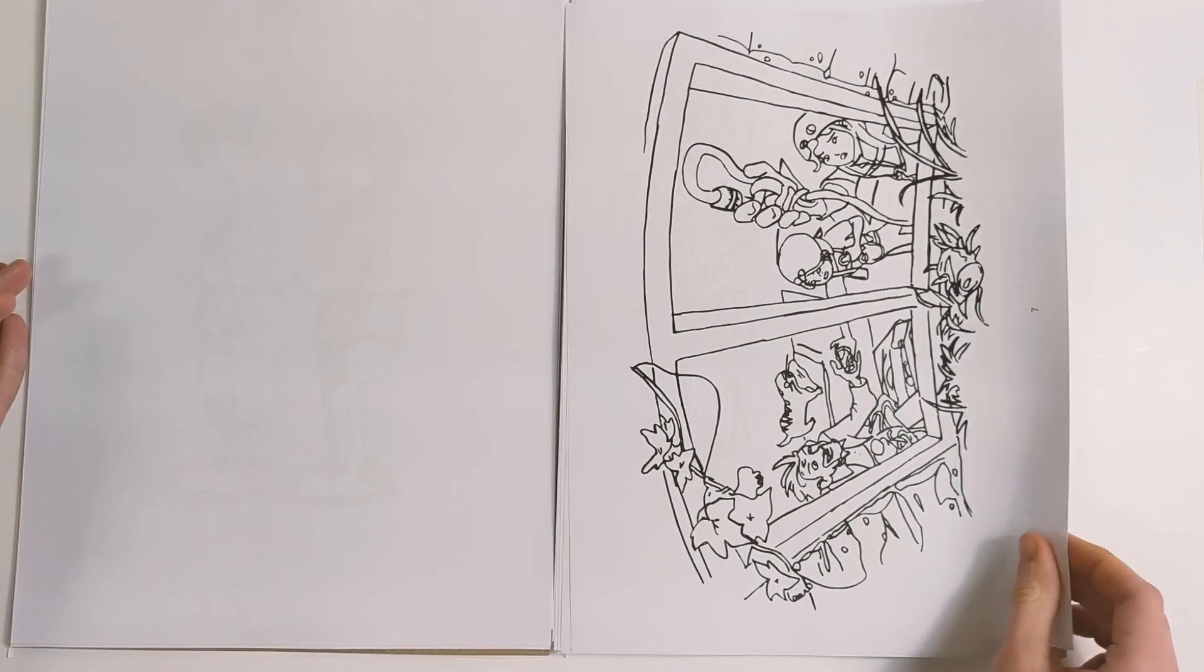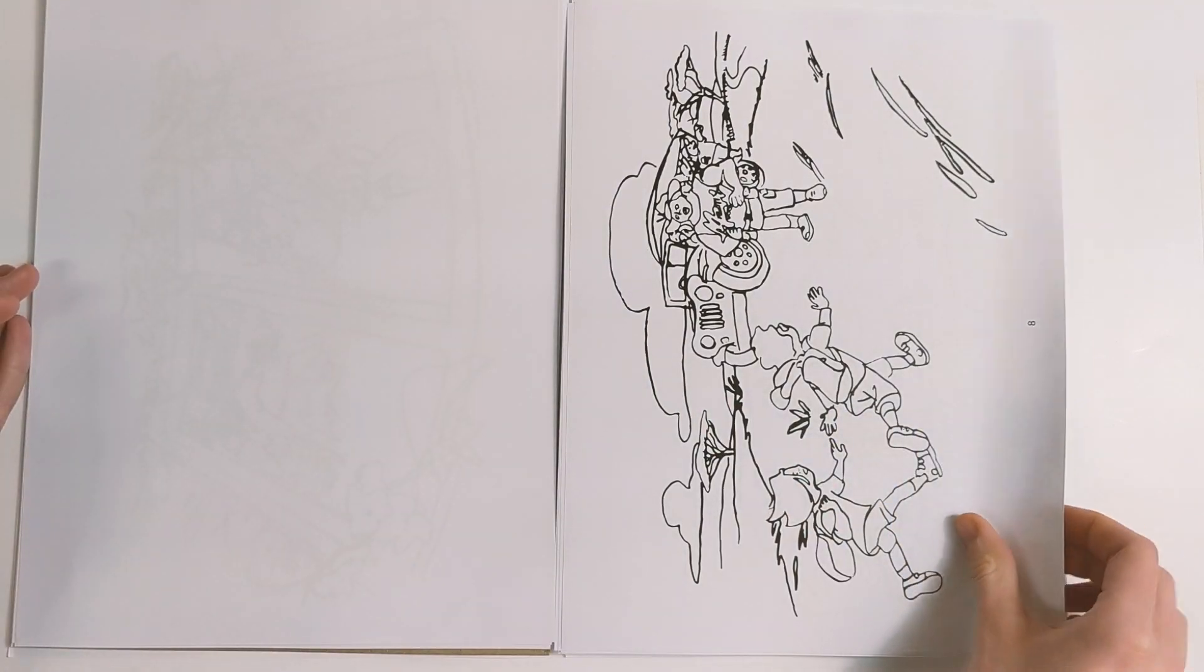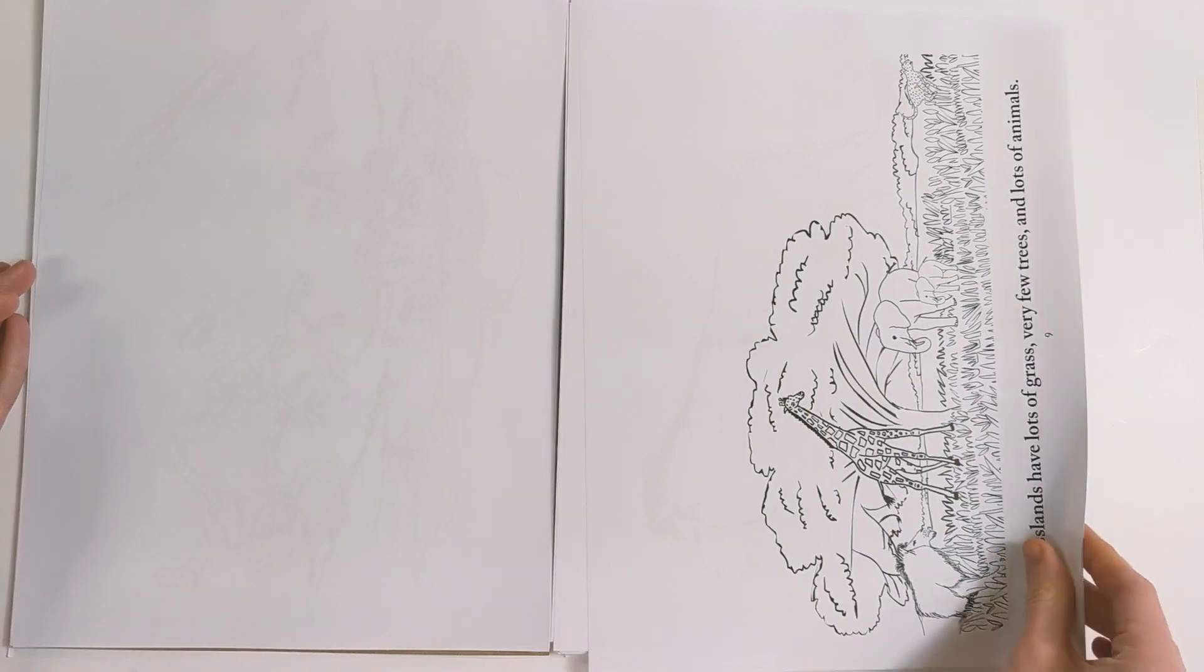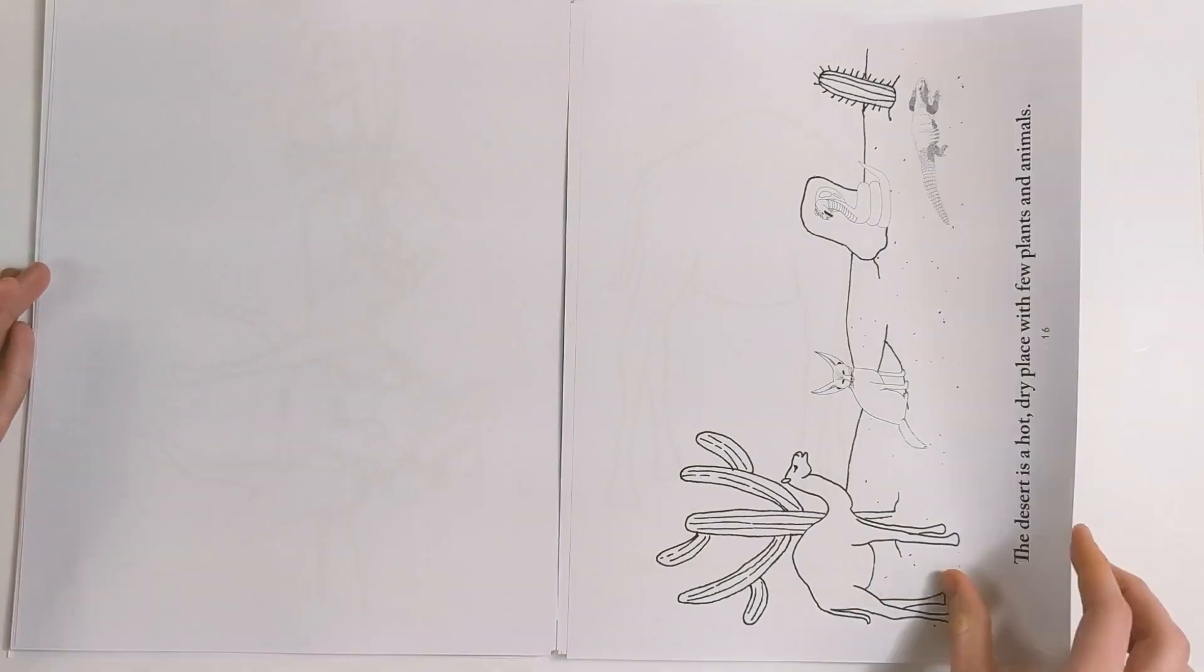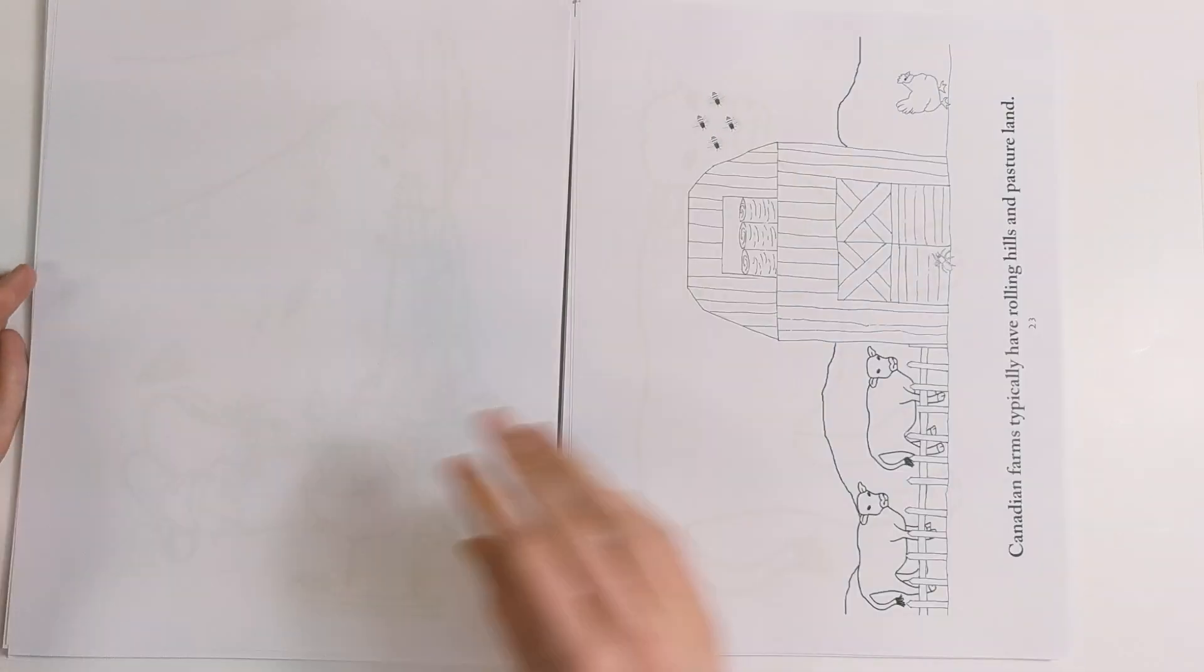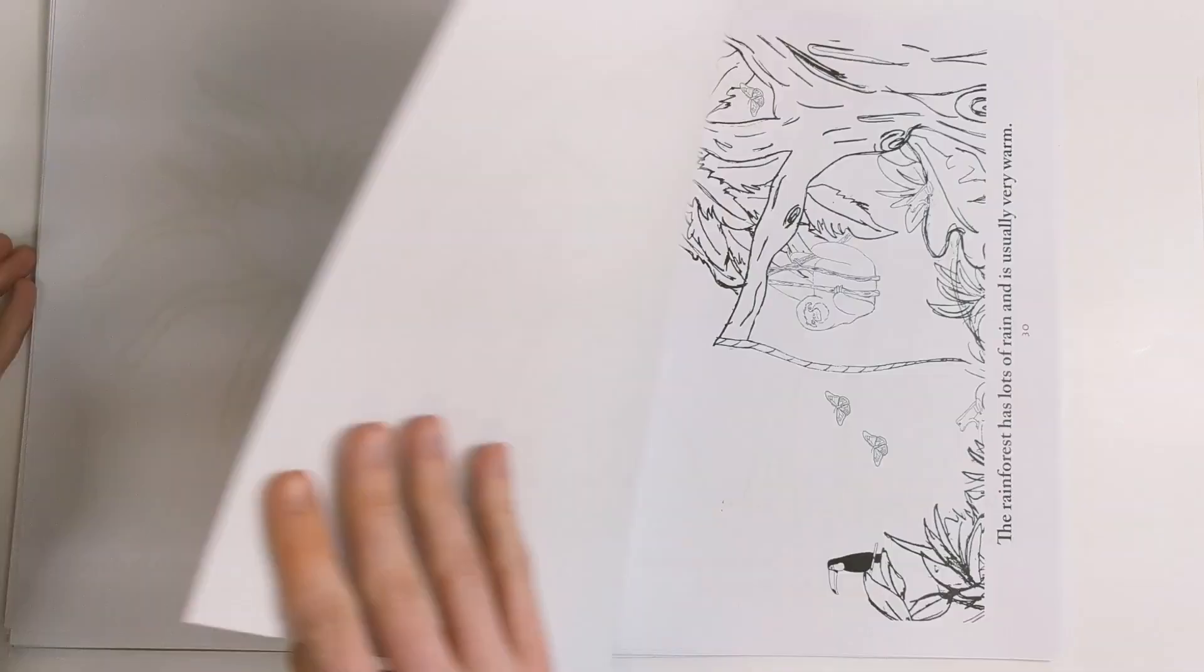Each one of our Coloring Page Packs include illustration pages with black line images of the illustrations from the novel, and subject pages that have large black line illustrations along with key facts. This is a great way for your youngest student to tag along, or to add a bit of art to your Sassafras Science journey.